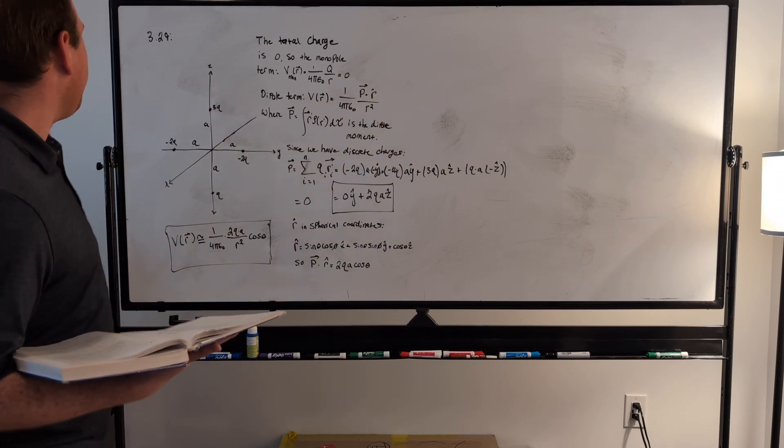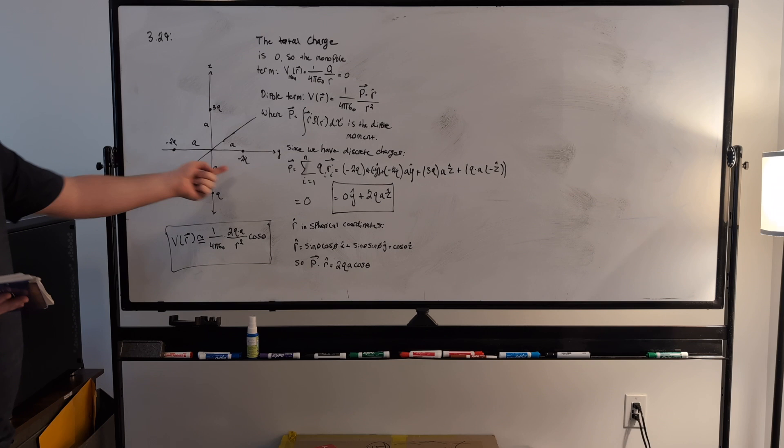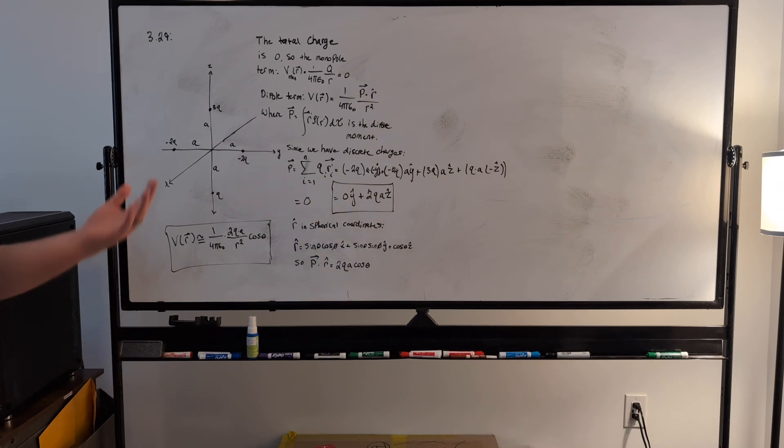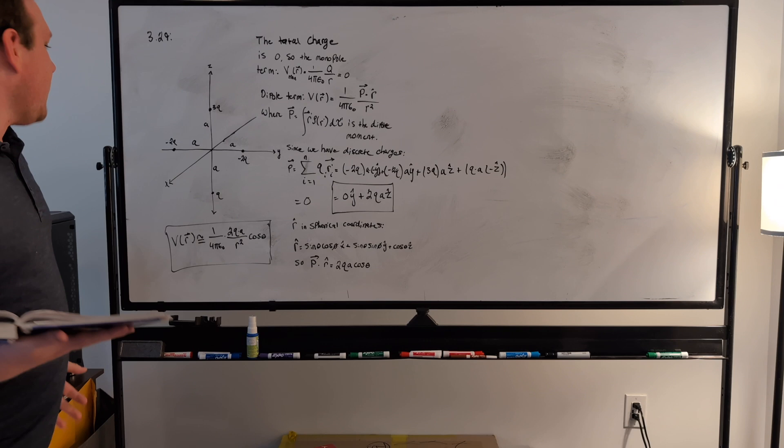The charge adds up to zero, because we have minus 4q and then 3 and 1q, so that's 4q, so minus 4q plus 4q is just going to be zero. So the total charge adds up to zero.